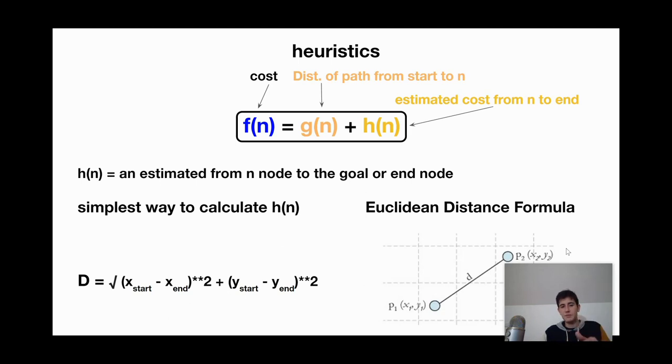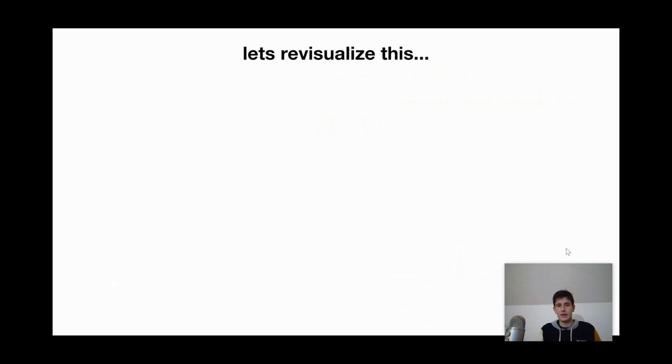And that's how we find the distance. So that's the way we calculate H of N. So remember, H of N is an estimated value from the nth node to the goal or end node. And this is only one way of calculating H of N or our heuristic value. There are many other ways that we can calculate the heuristic value. But in this case, I want to keep it super simple. So now we remember that cost is equal to the distance of a path from start to the nth node. And H of N is equal to the estimated cost from nth node to the end. Let's re-visualize this.